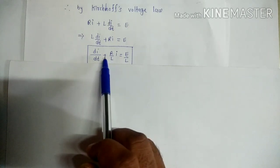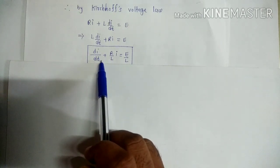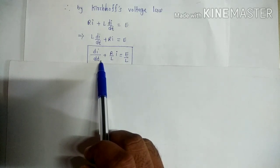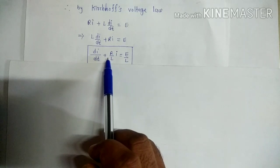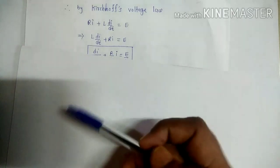After solving this differential equation for I and T by the known method, we get the solution as I equal to a function of T — that is, we get the relation between current I and time T.